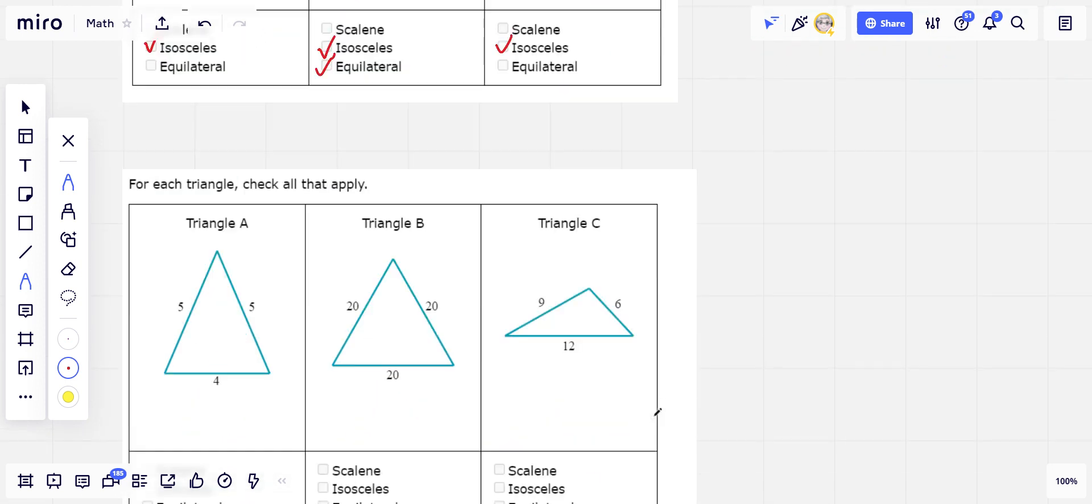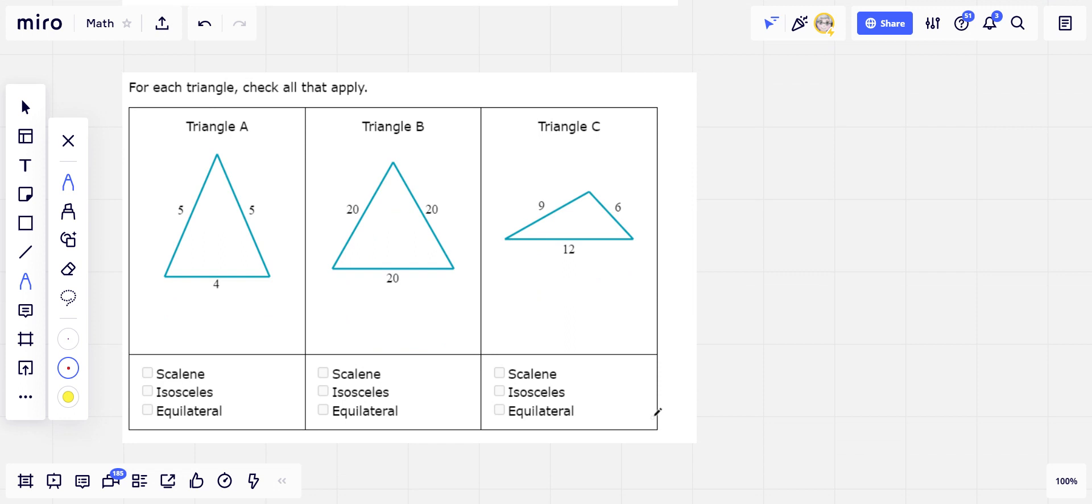Let's try another set of these just to practice. So here in triangle A, we have 5 and 5 and 4. So that's two sides the same length. That is isosceles, but not equilateral because you'd need all three the same length.